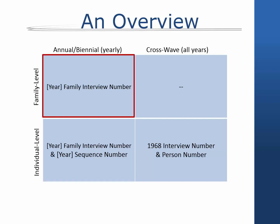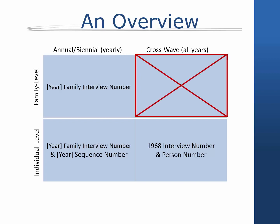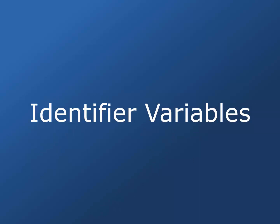Like individuals, families also have a unique ID each wave, but the 1968 ID does not provide enough information to merge families over time. The PSID provides four key identifier variables which allow data users to define individuals and families in specific ways and across all waves of the study. The four IDs are the wave-specific family interview number and sequence number, and the 1968 ID and person number.